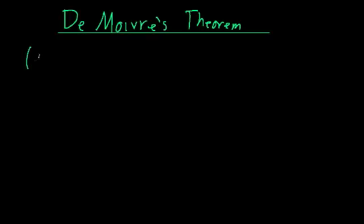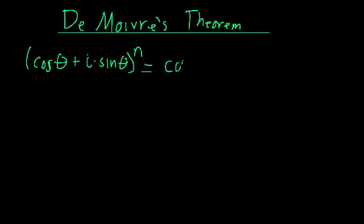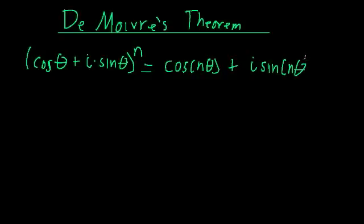He was able to show that cosine of theta plus i times sine of theta — this should seem fairly familiar — but if you have this raised to the n power, where n is just any integer, that this is equal to cosine of n times theta plus i times sine of n times theta. This is a handy formula that's pretty useful for taking roots of complex numbers.